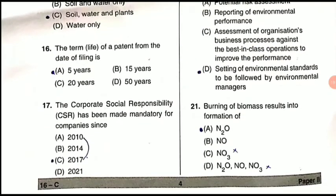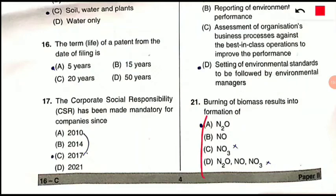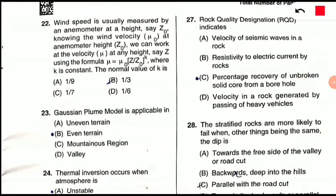Question 21: Burning of biomass results in the formation of what? The correct option is D — when biomass is burned it results in the release of oxides of nitrogen including N₂O (nitrous oxide), also called laughing gas. Nitric acid and nitrogen trioxide are also released by the burning of biomass.